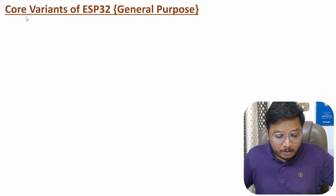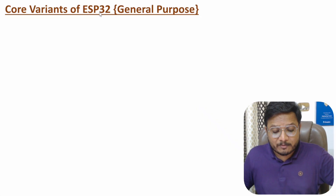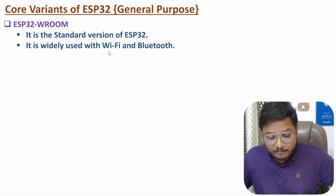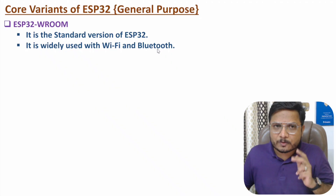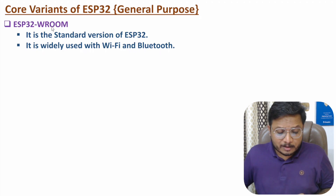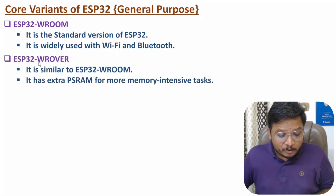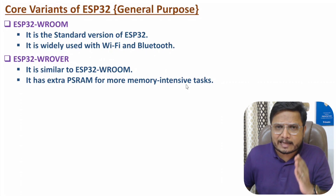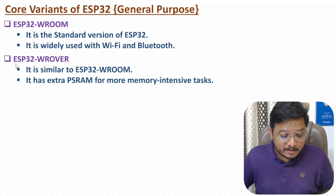First, I will discuss about core variants of ESP32, which we widely use for general purpose. The first core variant is ESP32 WROOM module. It is a standard version of ESP32 and it is widely used with Wi-Fi and Bluetooth. The second core variant is ESP32 WROVER. It is similar to ESP32 WROOM, but it has extra PSRAM. That's why it is more suitable for memory intensive tasks.